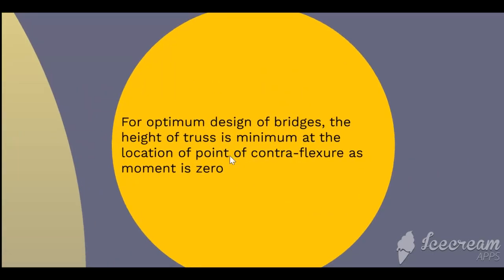The best advantage of the Point of Contra Flexure can be obtained in bridges, where the truss height can be reduced at the point of contra flexure because the bending moment is zero. At that point, you can optimize the height of the truss and thereby optimize the overall design.